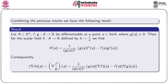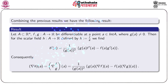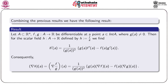Combining the previous two results, we have the quotient rule: let A be a subset of Rⁿ, f and g two scalar fields defined on A, both differentiable at an interior point a, with g(a) ≠ 0. Then h′(a) = (1/g(a)²) · (g(a) · f′(a) − f(a) · g′(a)), where h = f/g. Consequently, grad(f/g)(a) = (1/g(a)²) · (g(a) · grad f(a) − f(a) · grad g(a)).